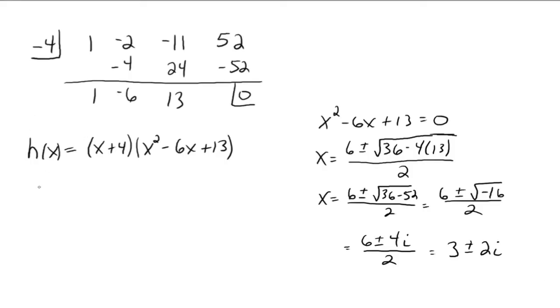So our zeros, then, are negative 4, 3 + 2i, and 3 - 2i. So we have two complex zeros, and see, they occur in conjugate pairs, just like we expected them to do from that previous video. And there are three of them. Since the negative 4 is a real number, that's the only spot where the graph hits the x-axis. The other zeros don't hit the x-axis because they're not real numbers.